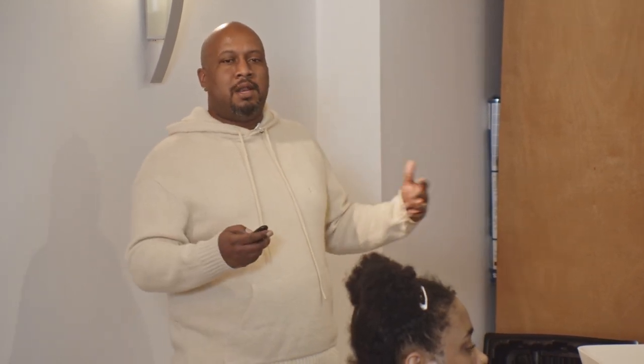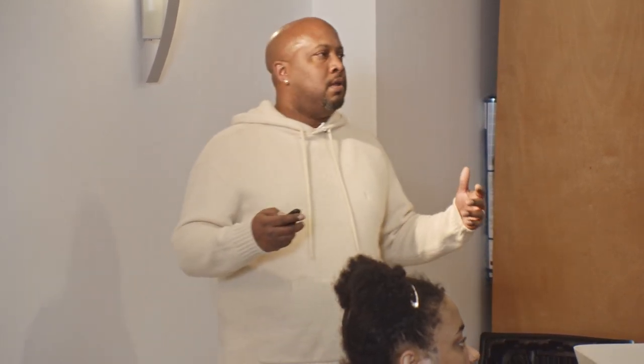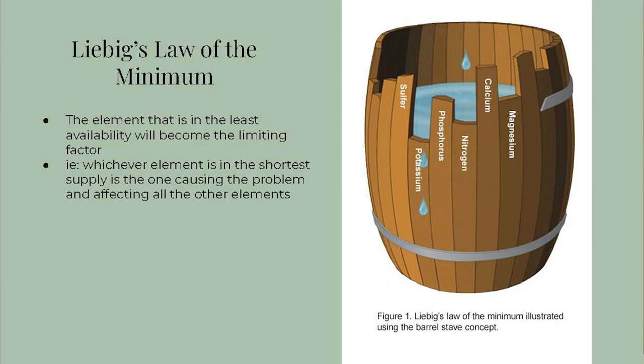Along the way we may talk about Liebig's Law of the Minimum — it's the element you have the least of that becomes your main constraining factor on growth. So if you want to get the maximum potential from your plant, you need to make sure you have all the necessary essential elements, because the one you have the least of is your limiting factor.